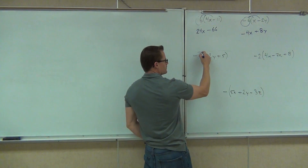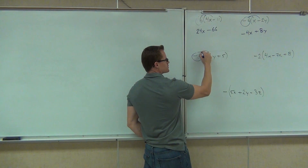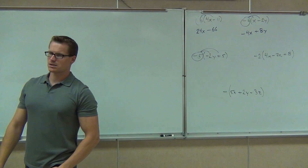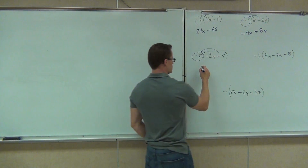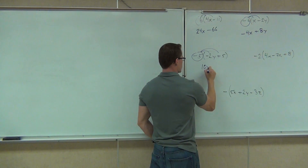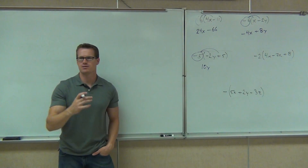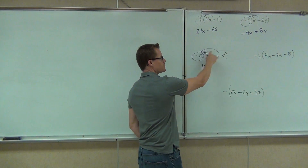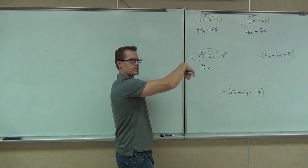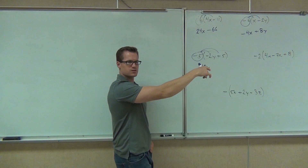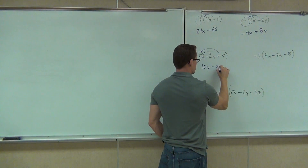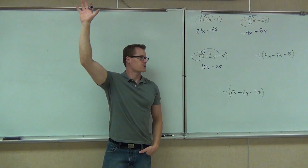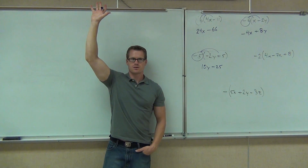Moving on — negative 5. We'll distribute this to both of these terms. Negative 5 times negative 2y — what do we get? Positive 10y. It's got to be a positive — a negative times a negative is a positive. Next, we'll have negative 5 times positive 5. This is why we're circling that number with the sign — to take that negative with us. Minus 25. Would you raise your hand if you got all three of those right? Good for you.